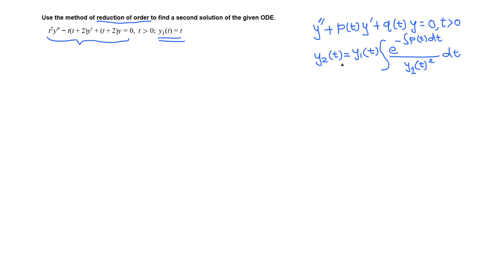then a second solution y2 is given by the first solution times this integral: the integral of e to the negative ∫p(t)dt, over the first solution squared, dt. This is just like an integrating factor.